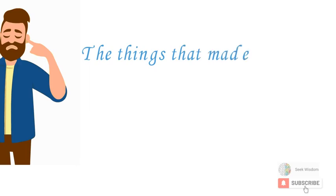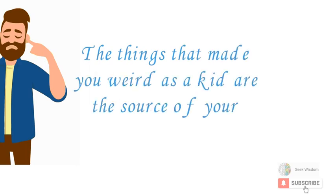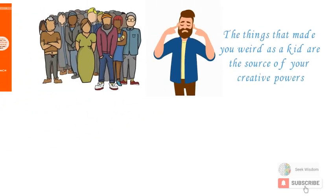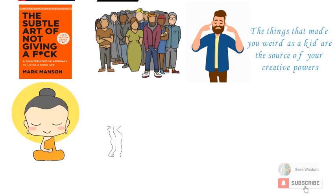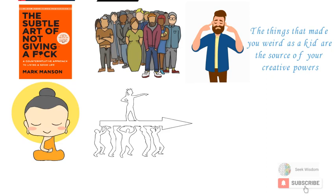Then another quote. The things that made you weird as a kid are the source of your creative powers, says James Victore in Feck Perfection, dangerous ideas on the business of life. These are the base elements of who you are. Not perfect. Not trying. Just yourself. And as Buddhists will tell you, just being yourself without effort is the best way to leave that troublesome ego at the door.